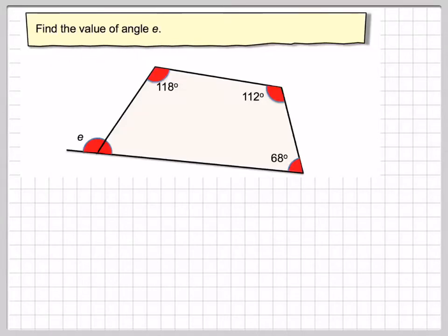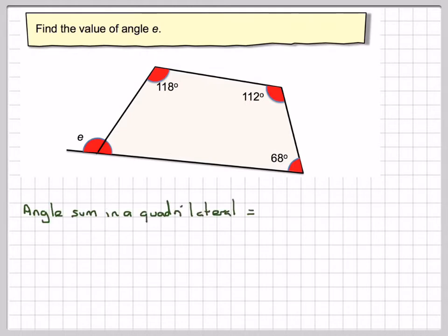Find the value of the angle E. What we've got to do is find the value of this angle. However, we know that this angle, plus this angle, plus this angle, plus this angle, add up to 360 degrees. This is what we call a quadrilateral because we've got four sides. So, the angle sum in a quadrilateral is 360 degrees.